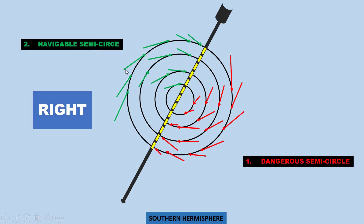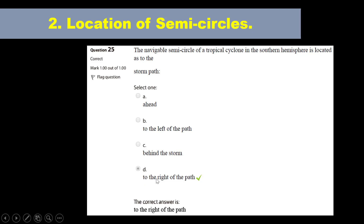This is how the tropical cyclone looks in the southern hemisphere — it's turning clockwise. You have the right part of the tropical cyclone on one side and the left on the other side. On the left-hand side you have the dangerous semicircle, and on the right-hand side you have the navigable semicircle in the southern hemisphere. So the correct answer is to the right of the path.